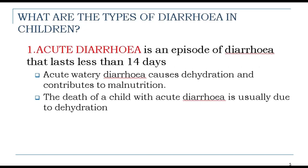The first type of diarrhea in children is acute diarrhea — an episode that lasts less than 14 days. Acute diarrhea causes dehydration and contributes to child mortality. The death of children with acute diarrhea is usually due to dehydration.